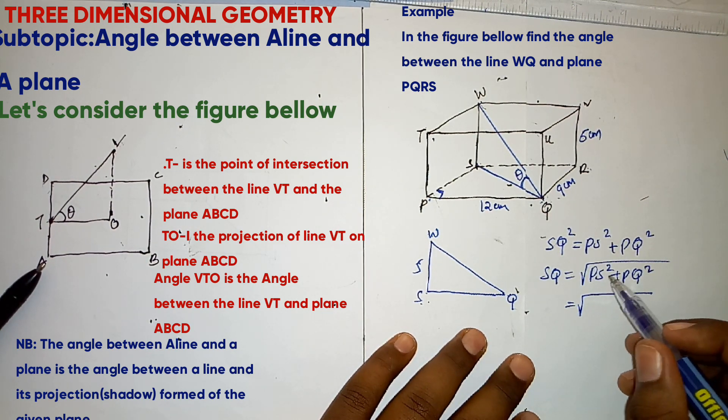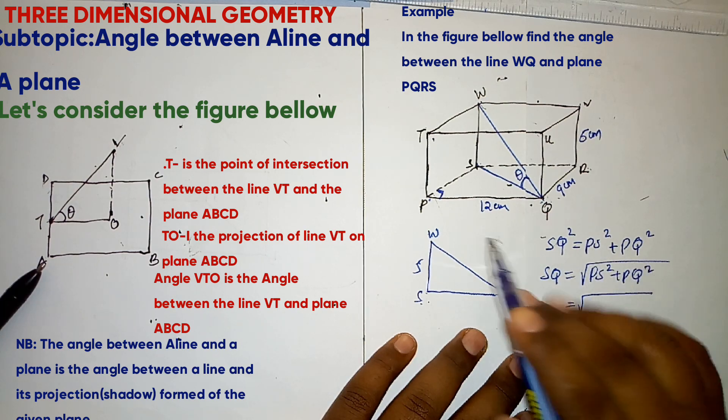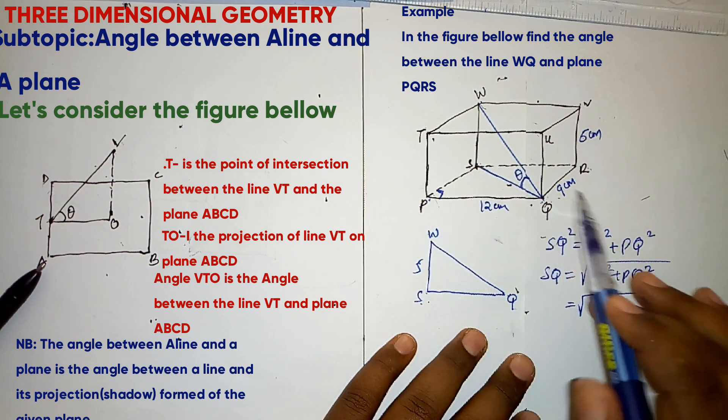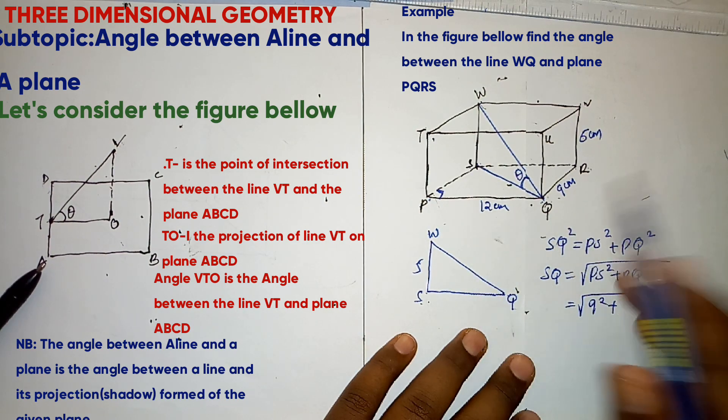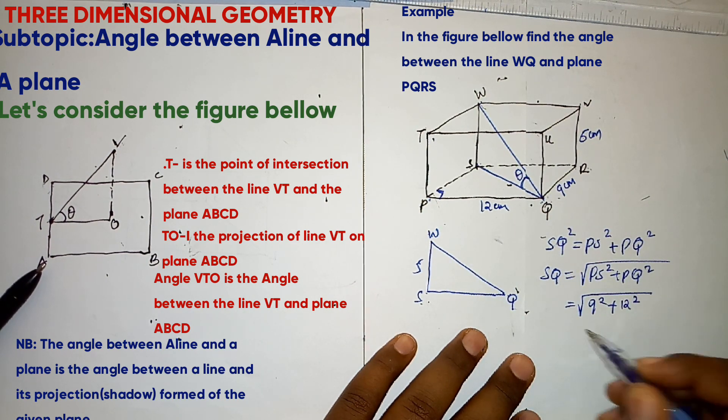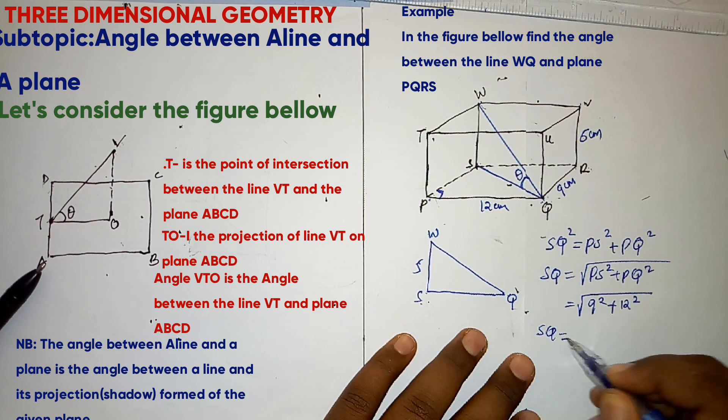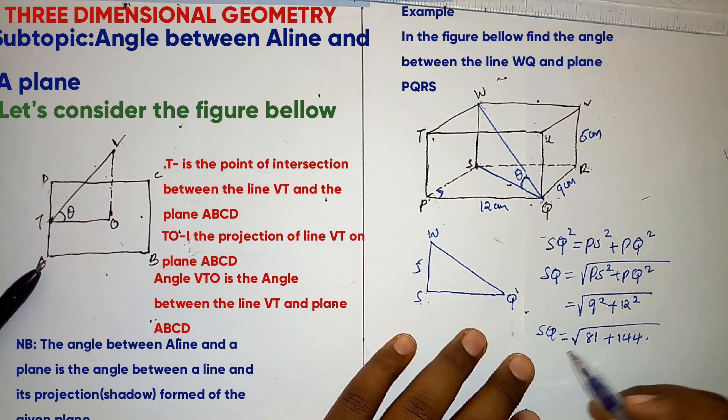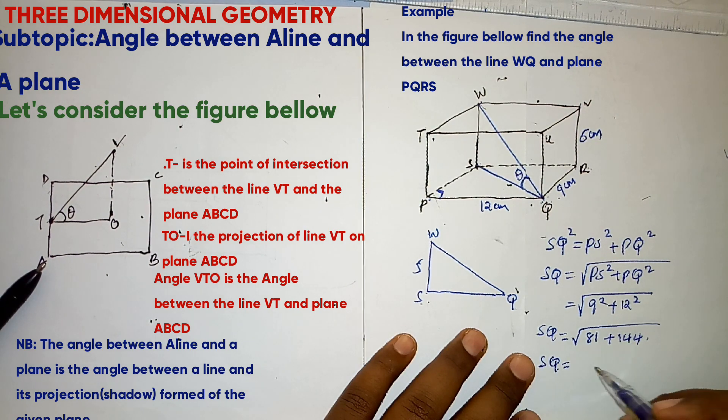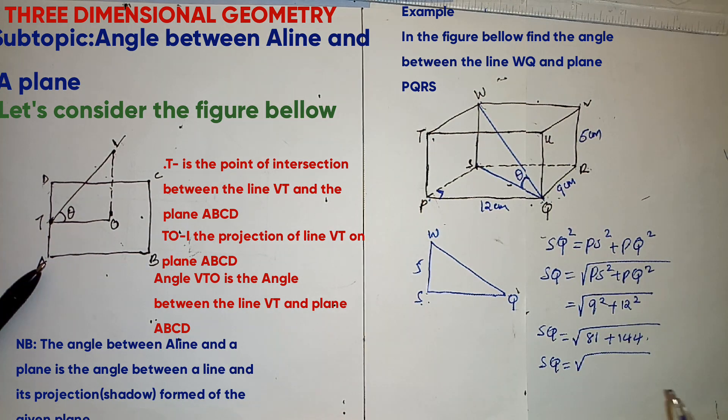So PS squared, PS will be equal to 9 squared plus PQ is 12 squared. So SQ will be equal to square root of 81 plus 144. So square root of 225.